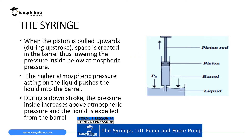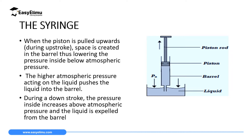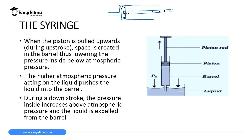The first application is a syringe. A syringe is operated using the idea of atmospheric pressure and the pressure difference. Before you use a syringe, you must make sure that there is no space left inside — the piston and the valve must be fully pushed in. When you put it inside the liquid and you pull up, you do what you call an upstroke.